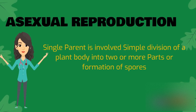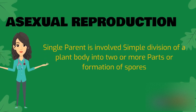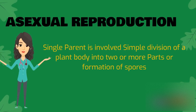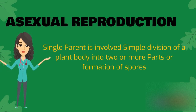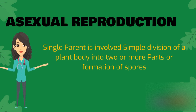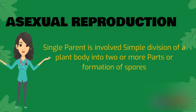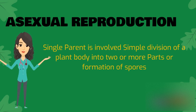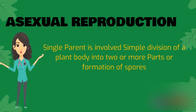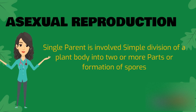In asexual reproduction, a single parent is involved. It involves simple division of a plant body into two or more parts, or formation of spores. This is common among single-celled organisms. The two types are fission and spore formation. Fission is a process where a parent cell divides into two to give rise to new individuals.